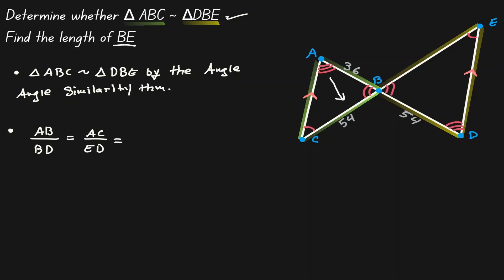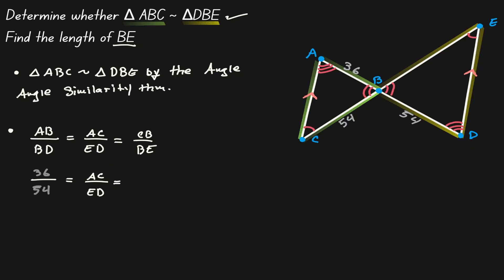The side opposite to the angle with three arcs must be proportional to the side opposite the three marks on the other triangle, so CB is proportional to BE. Now let's place down the information that we know: AB has a value of 36, BD has a value of 54. AC and ED we don't know, so we'll keep them as AC and ED. CB has a length of 54, and BE is what we're looking for.